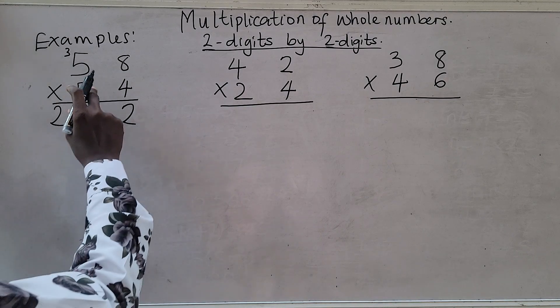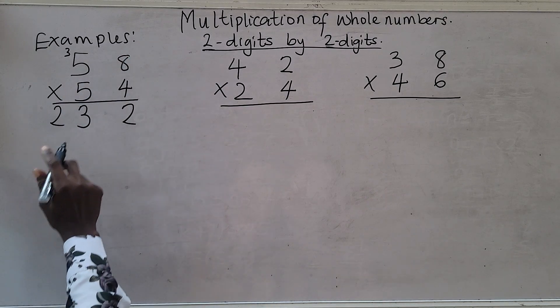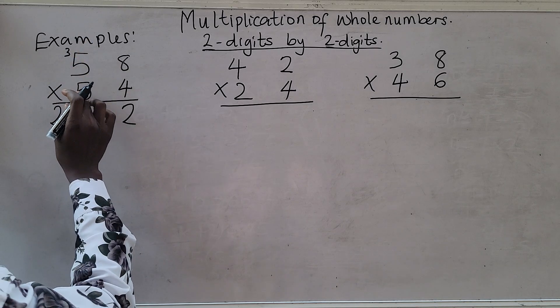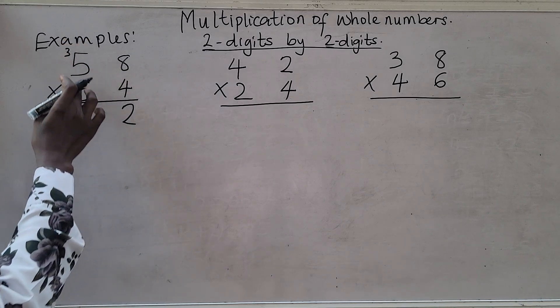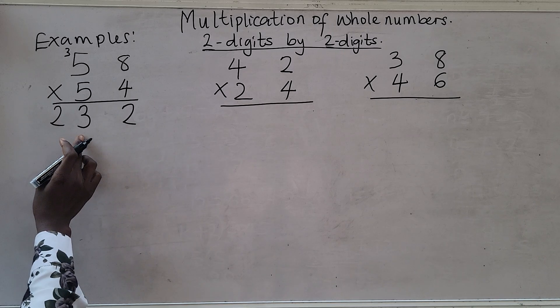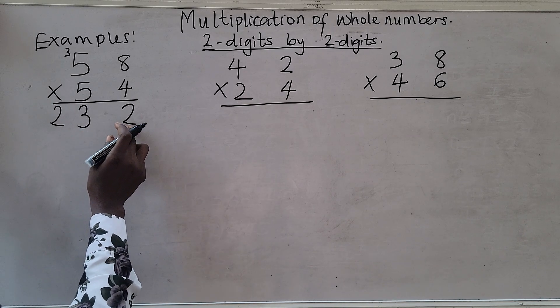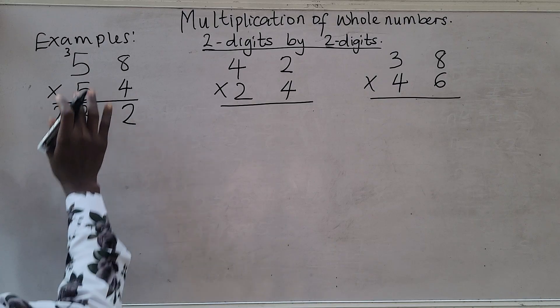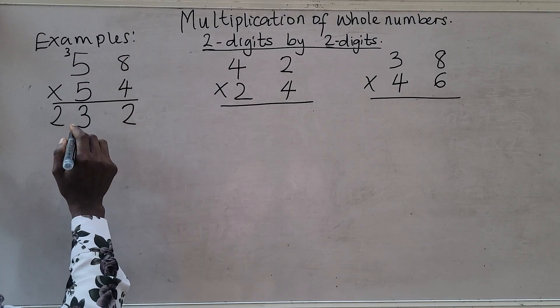So we go ahead and multiply with the second number. Five times eight is 40. Make sure when you are multiplying with the second number, your answers are right under it. Do not write your number here, write your answers here. So five times eight is 40.